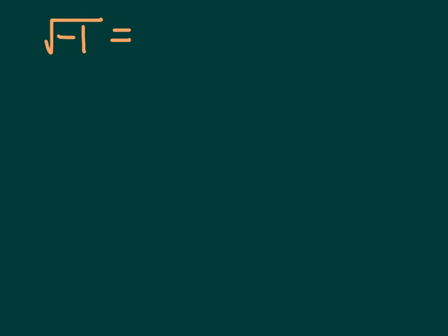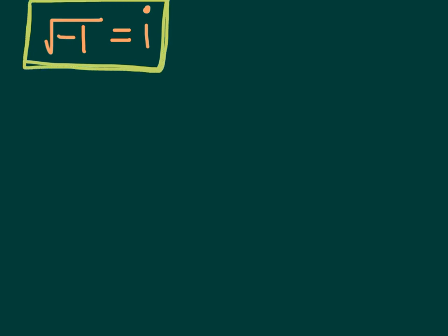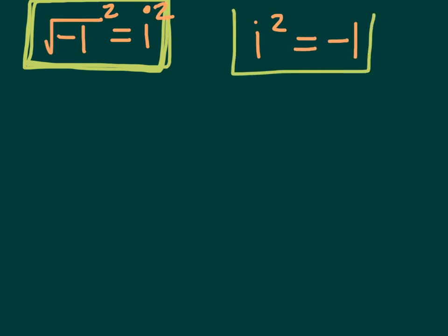Now, let's take the square root of negative 1. We can't take the square root of negative numbers in the reals. As we talked about at the beginning of the year with real numbers versus imaginary numbers, the square root of negative 1 is imaginary. The square root of negative 1 is i — the lowercase letter i. Conversely, if you take i and square it, you get negative 1. Super important that you know these two things.